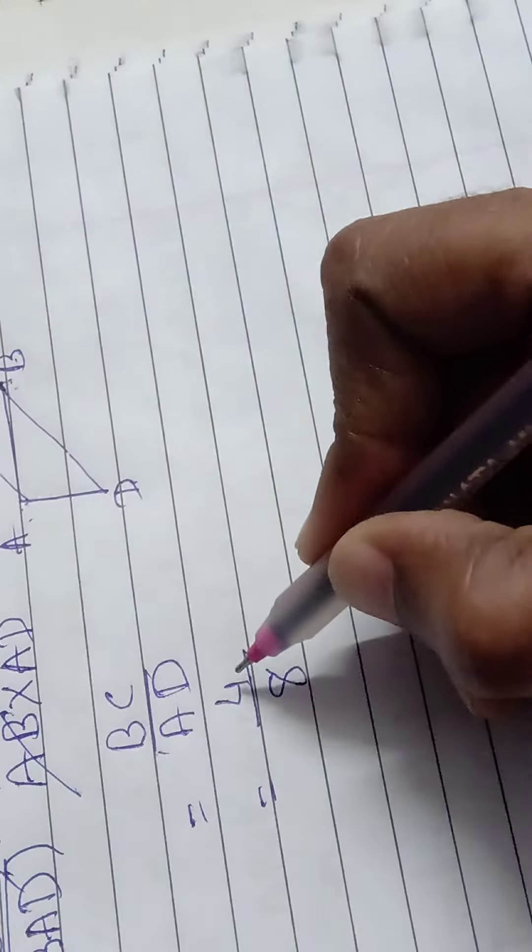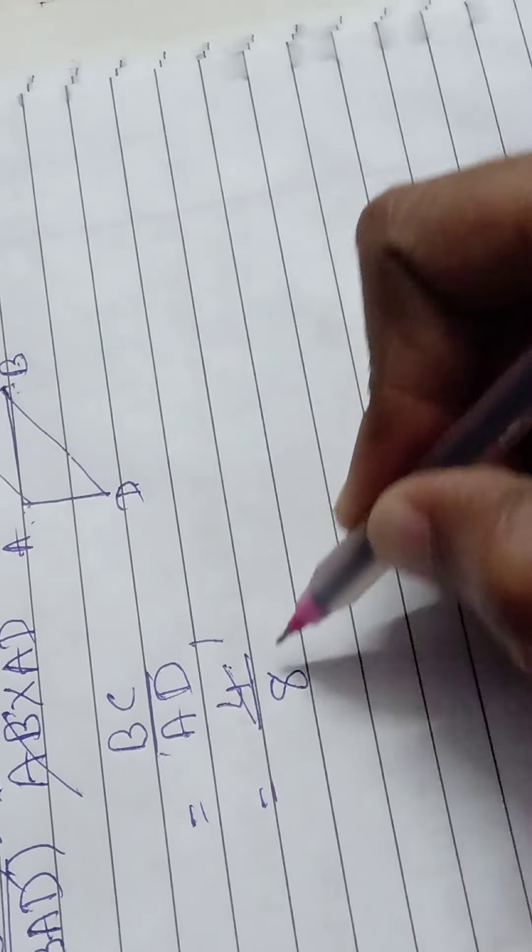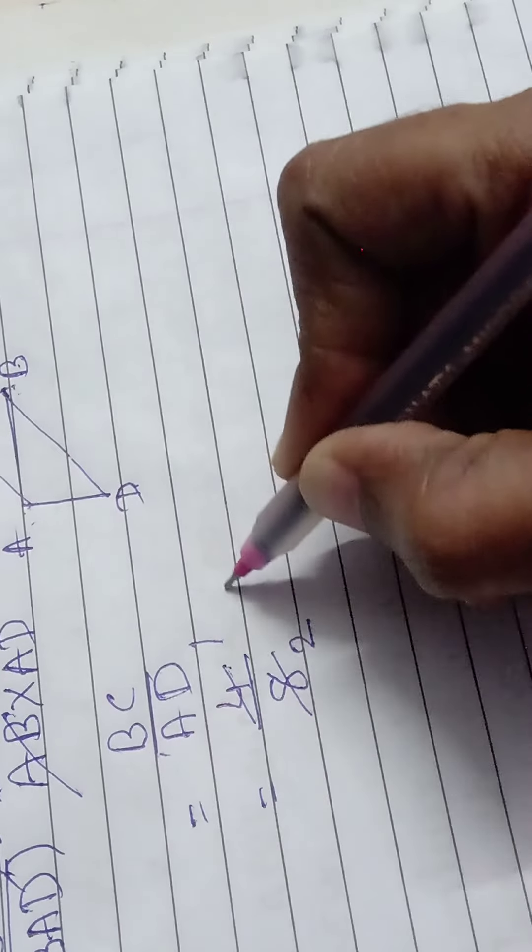Now we will divide it. 4 into 1 is 4, 4 into 2 is 8. So what is left? 1 upon 2.